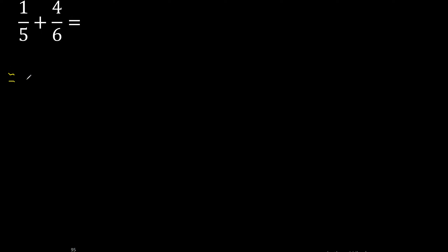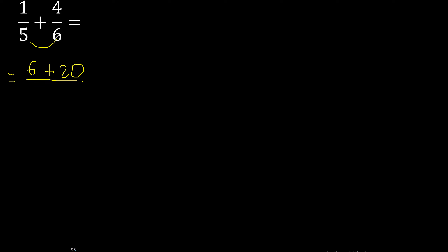First multiply like this: 6 multiplied by 1 is 6, 5 multiplied by 4 is 20, 5 multiplied by 6 is 30.